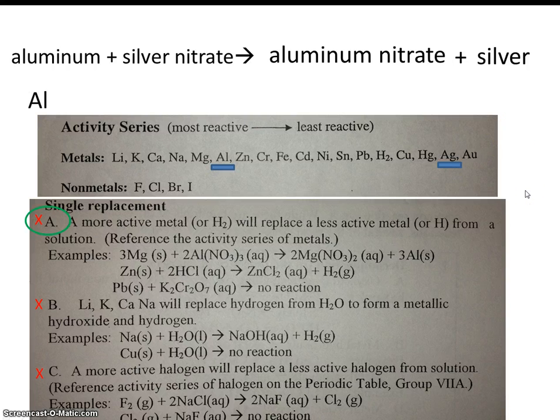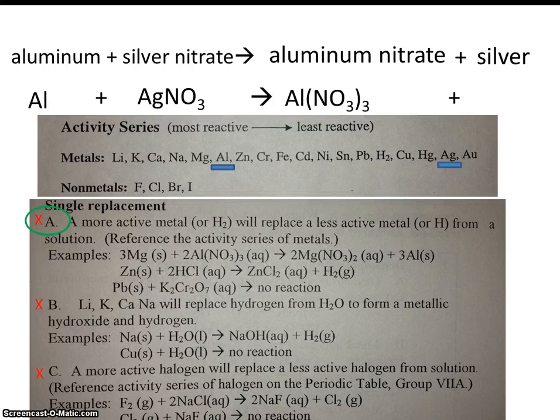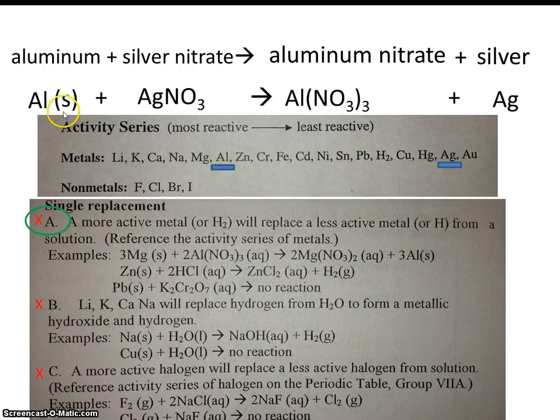So of course, the next step would be to write the formulas. Now, for these single replacement reactions, we're going to include phase notation. So the phase notation here, of course, will make more sense after we actually carry out some of these reactions in the lab. But aluminum is going to be a solid.